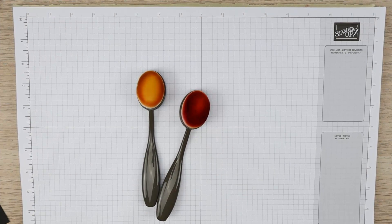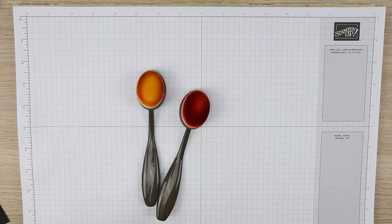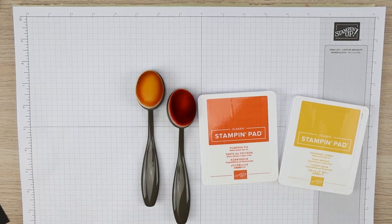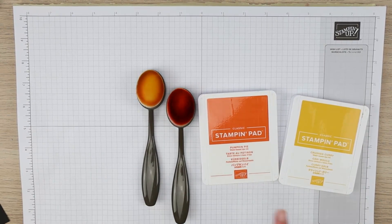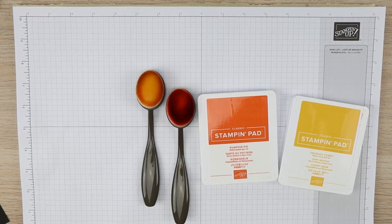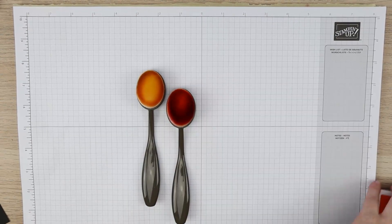The tools that you're going to need to do a sponging or ink blending technique is simply some ink pads and your blending brushes. The colors I've chosen today are pumpkin pie and crushed curry because you want to select colors that are next to each other on the color wheel so they blend nicely together. So let's get started.